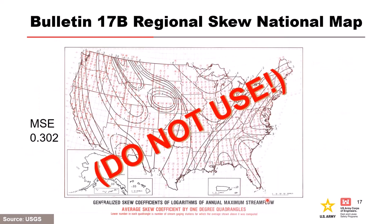Who has seen the Bulletin 17B regional skew national map? During development of flood frequency techniques in the late 1970s and early 1980s, a nationwide regional skew study was conducted and documented in the Bulletin 17C appendix — producing a map of ISO lines to determine regional skew value. It was produced on a national scale using methods that are 40 years old, and has been replaced with newer studies. The MSE for that national map is 0.302, and updated regional skew studies compare their MSE to that value. The big takeaway: don't use this national map.